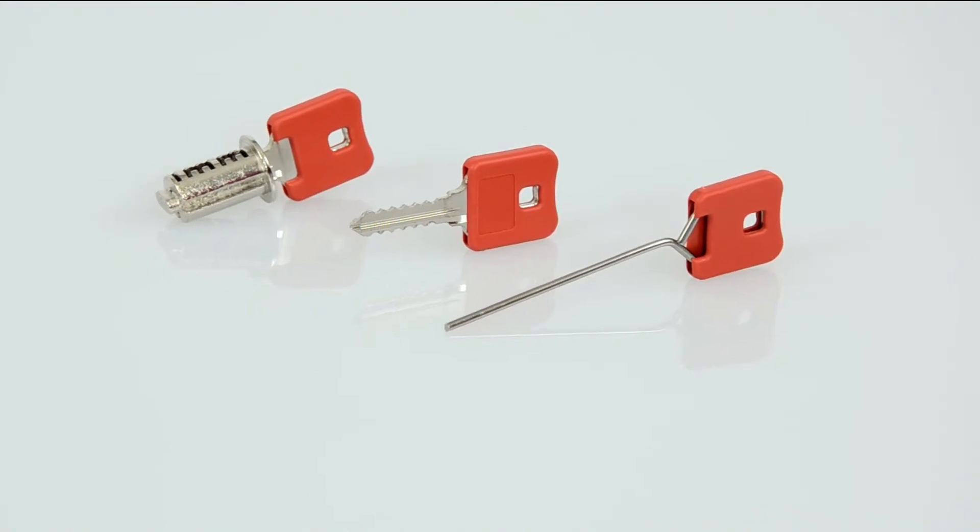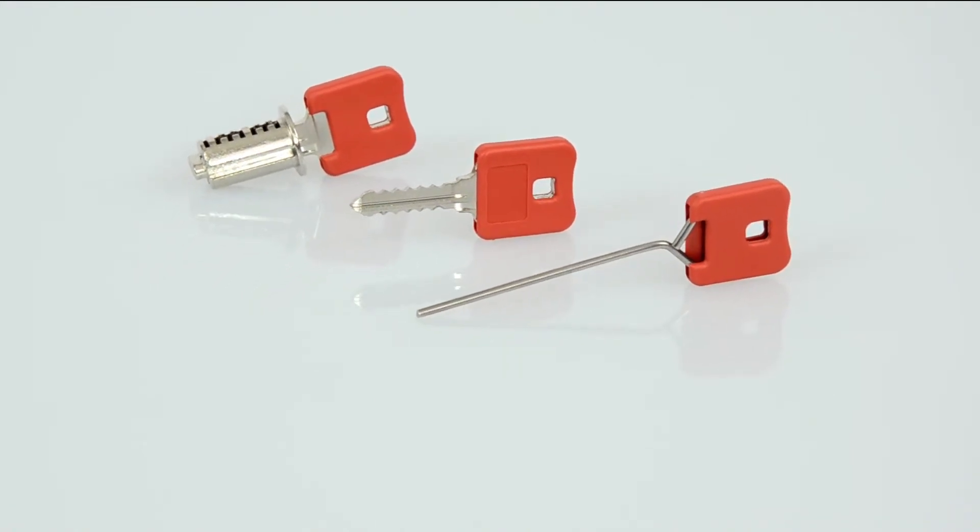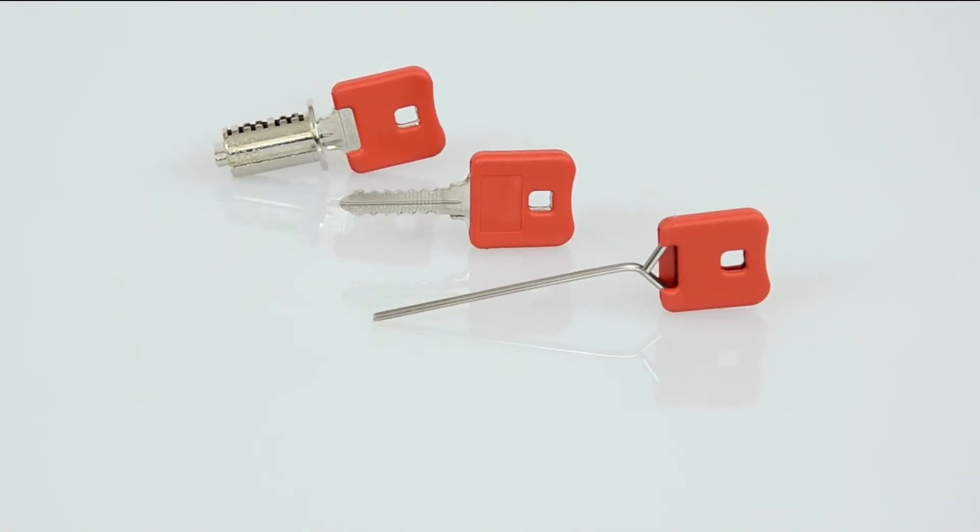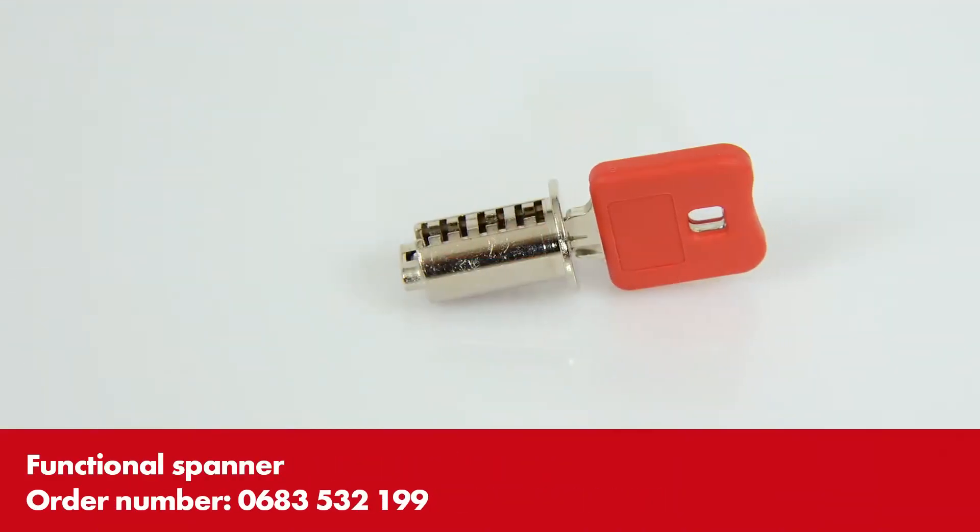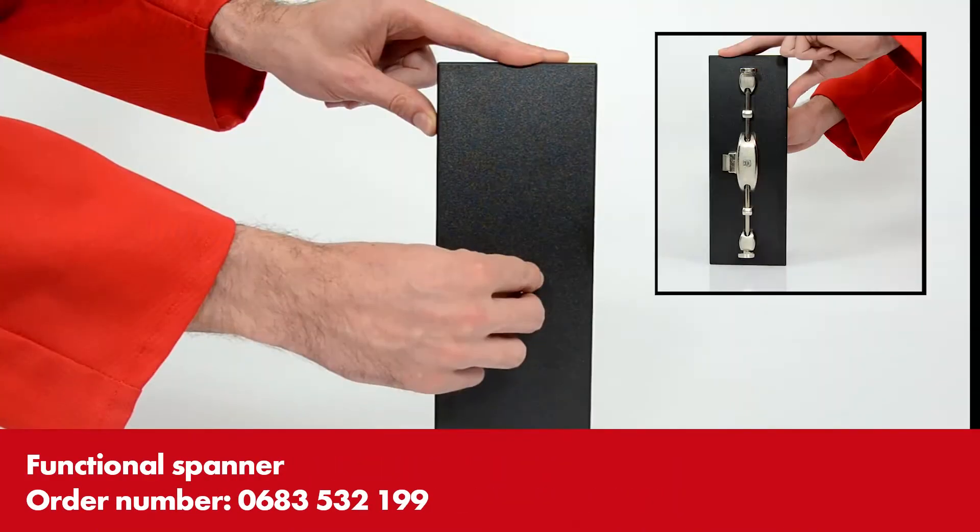Verth offers practical aids for the clever MS-5000 Furniture Lock System. For example, the functional spanner can be used to adjust the direction of locking.